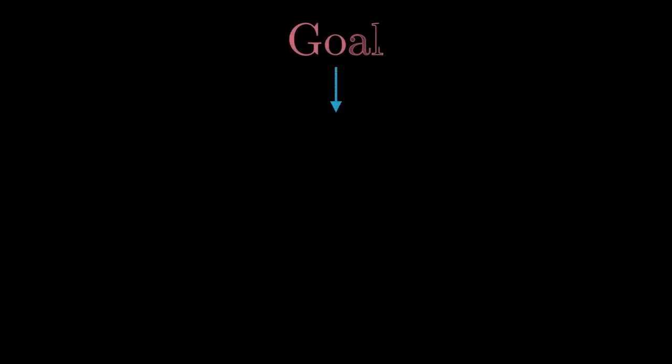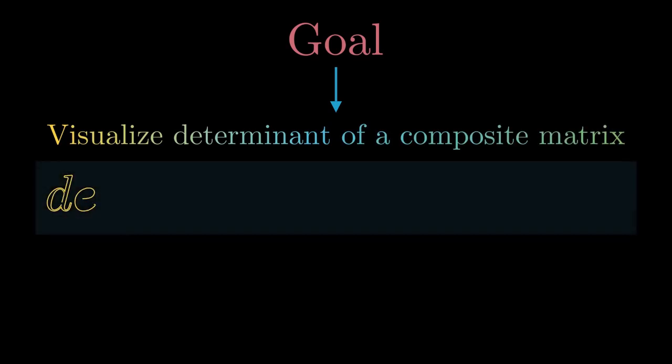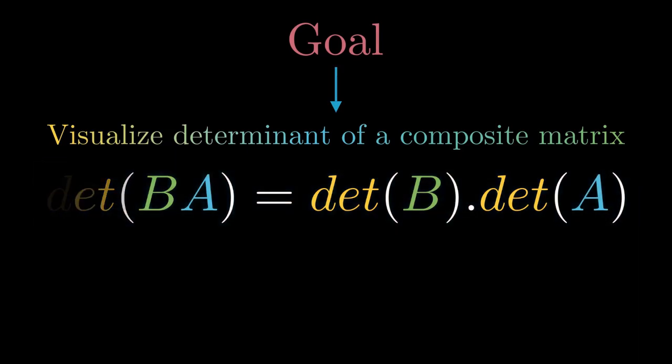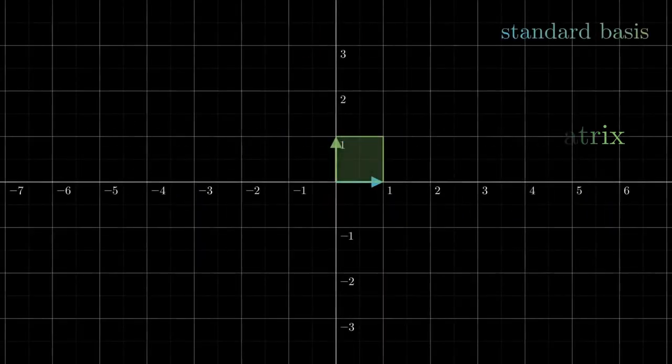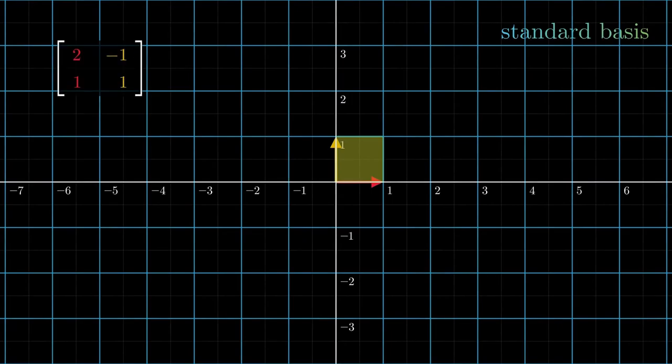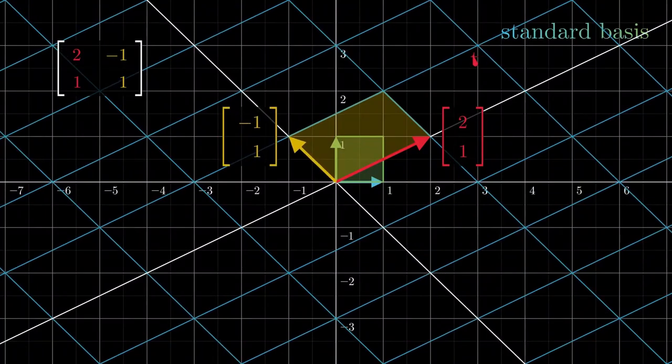Hello everyone. The goal for this video is to visualize the determinant of a composite matrix—that is, the determinant of a composite matrix is the same as the product of determinants of its individual matrices. I'd like to point out that visualizing this property heavily relies on you being able to interpret matrices as transformations of space. If that sounds unfamiliar...